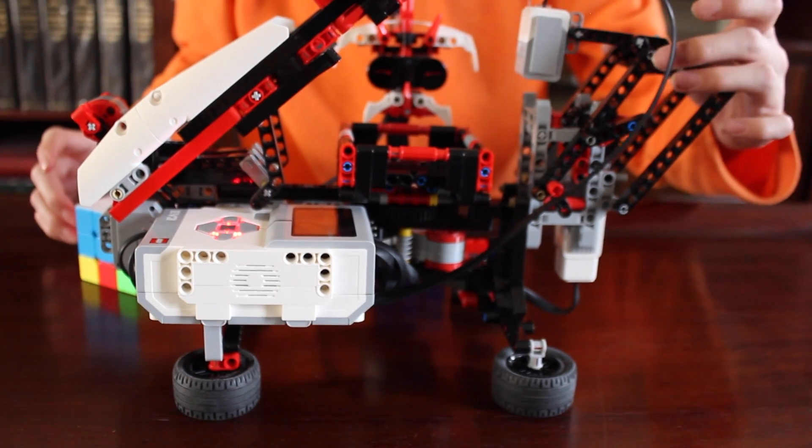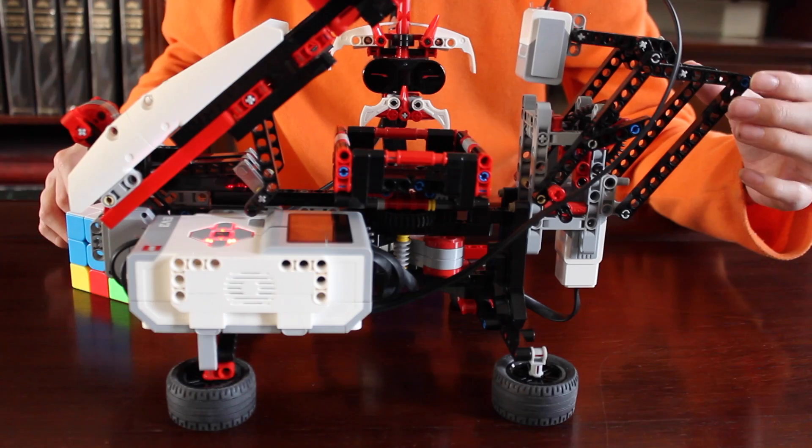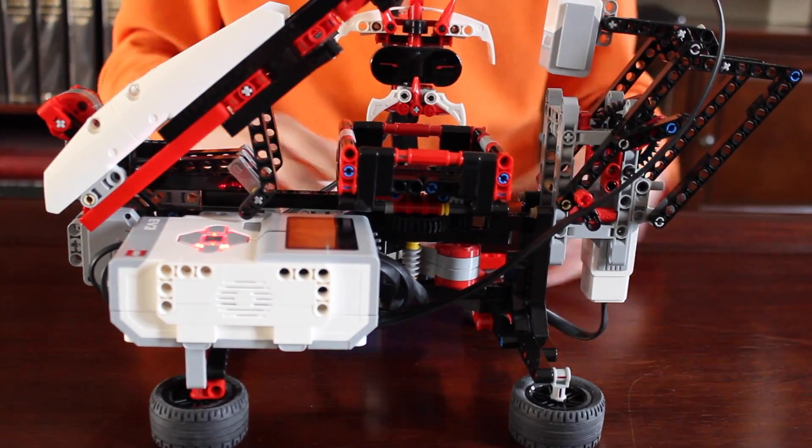And also, when it's solving Rubik's Cubes, don't put it in light or else the color sensor might get saturated. As I said on the Mindcuber site, it won't be able to see well.